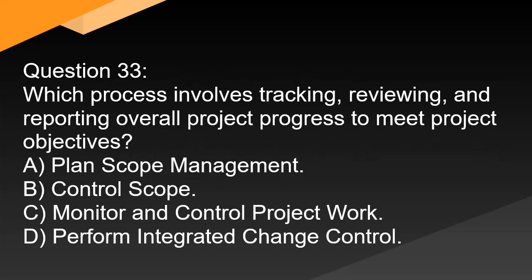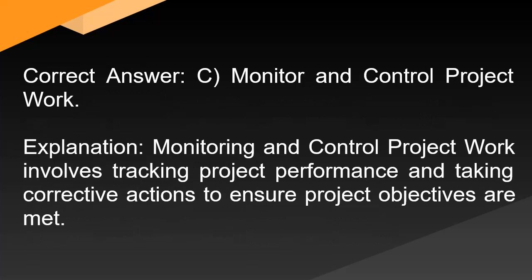Question 33: Which process involves tracking, reviewing, and reporting overall project progress to meet project objectives? A. Plan scope management. B. Control scope. C. Monitor and control project work. D. Perform integrated change control. Correct answer: C. Monitor and control project work. Explanation: Monitoring and controlling project work involves tracking project performance and taking corrective actions to ensure project objectives are met.